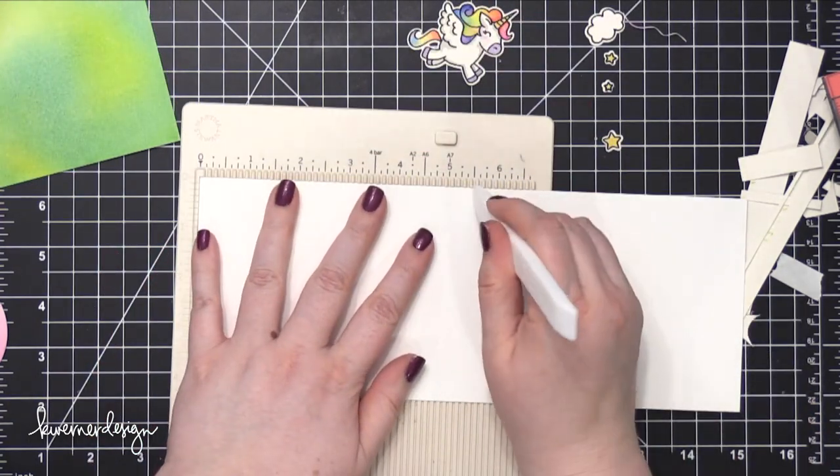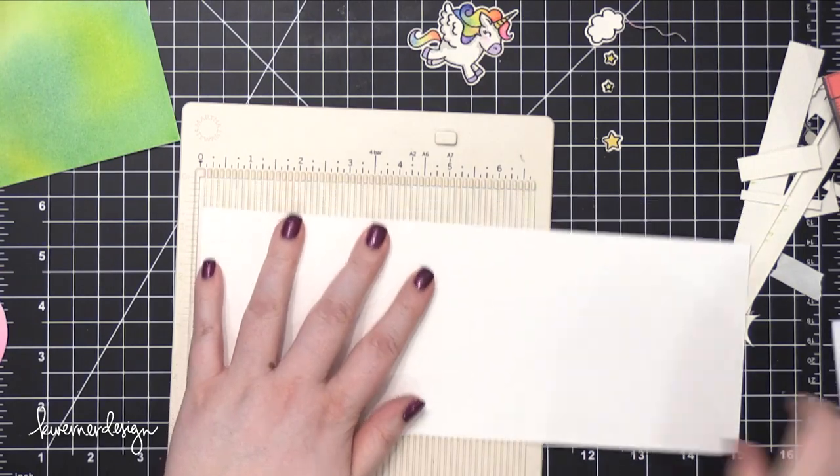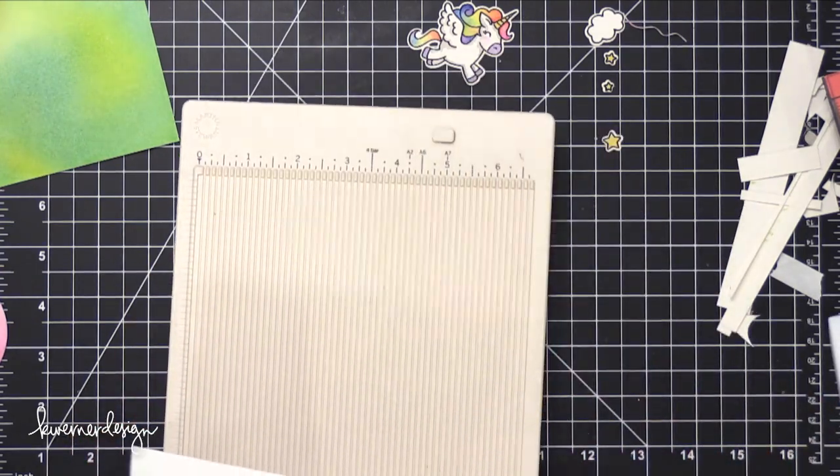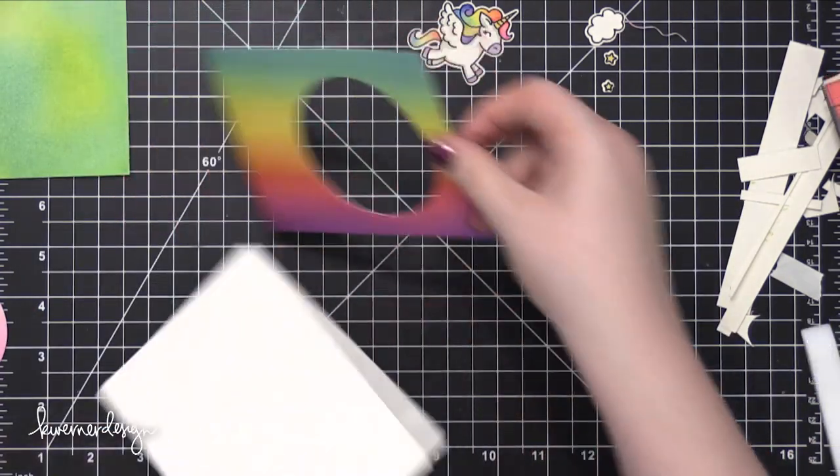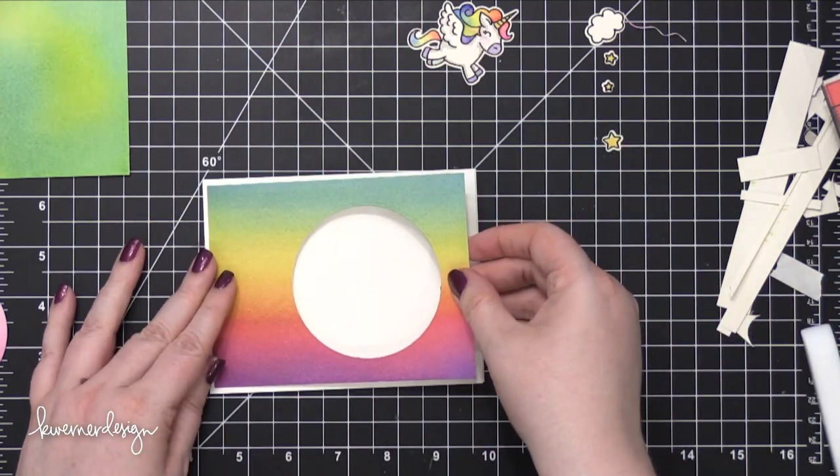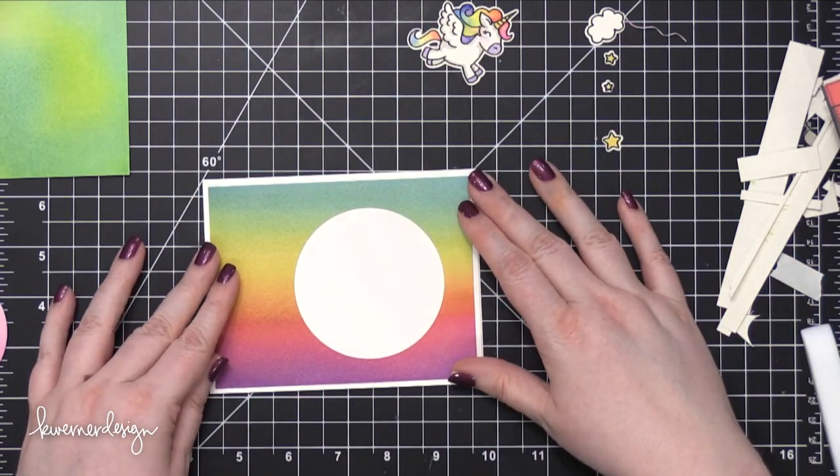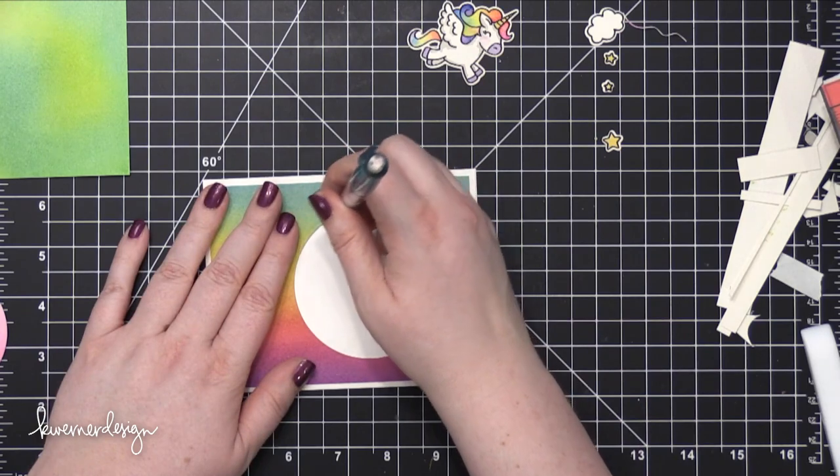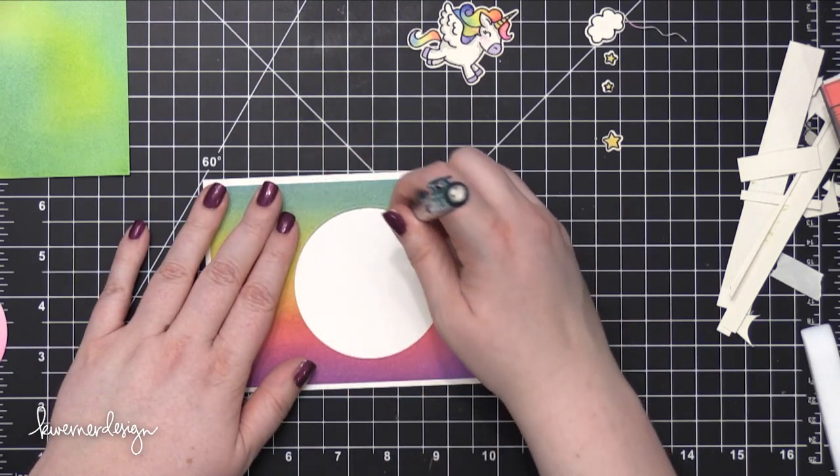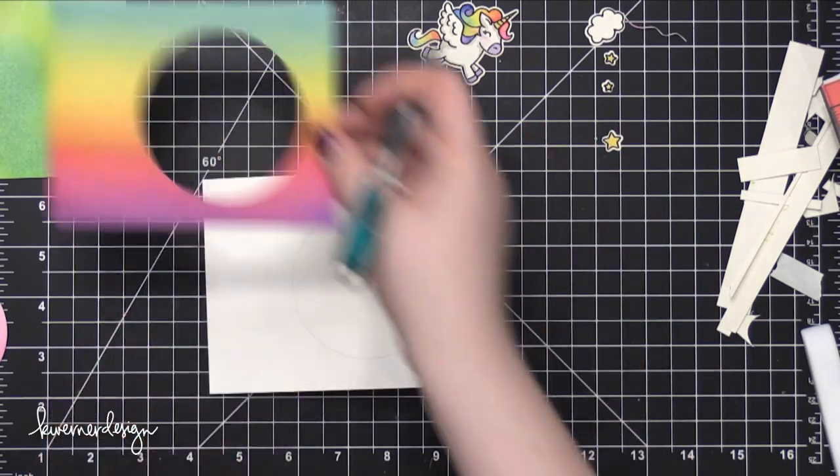So I'm going to create a card base, and this is some Neenah Solar White cardstock in the 110 pound version. And I've scored that at five and a half to create a side folding card. I'm going to place my watercolor panel over the top and use a pencil just to pencil in where that die cut circle window is.